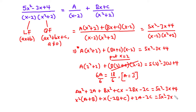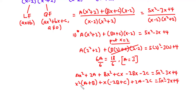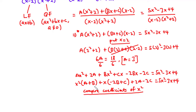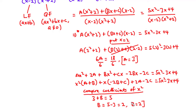Now let's compare coefficients. Comparing coefficients of x squared: A plus B equals 5. Since we know A equals 3, we have 3 plus B equals 5. Transposing, B equals 5 minus 3, therefore B equals 2.